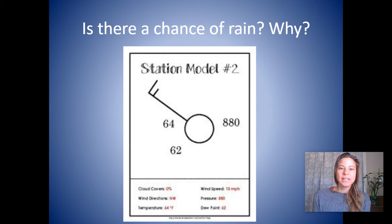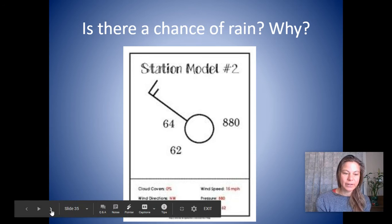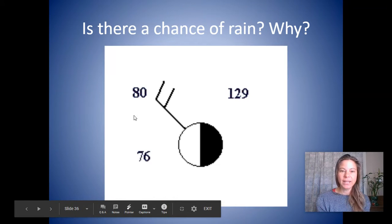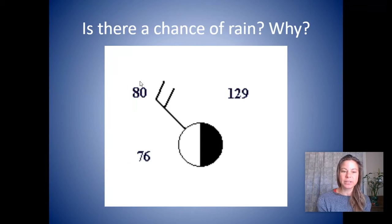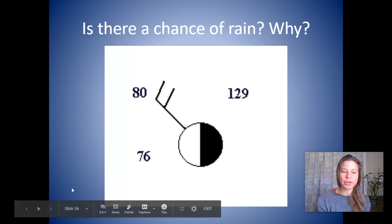What about this one? Is there a chance of rain? Why? Okay, temperature is 64 and the dew point is 62. Is there a chance that the temperature would drop from 64 to 62? Yes, so there's a pretty high chance of rain on this day. Here we have 80 is the temperature and 76 is the dew point. Yes, I would say there's a pretty good chance of rain on this day because the temperature and the dew point are close together.